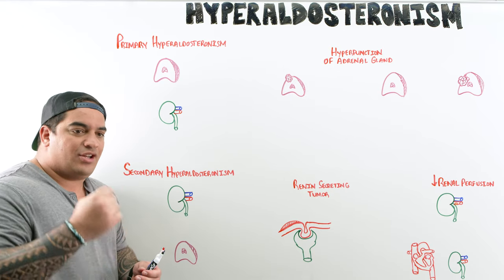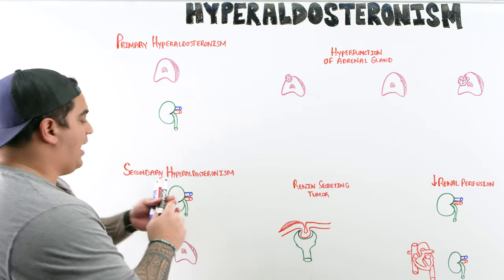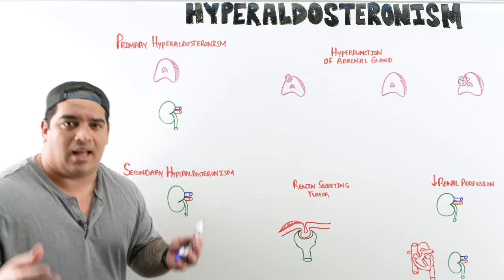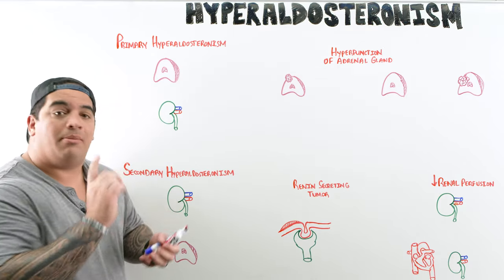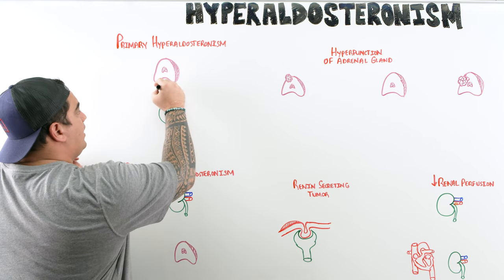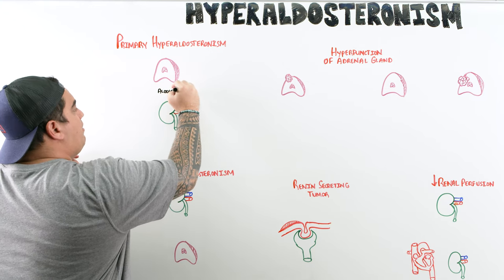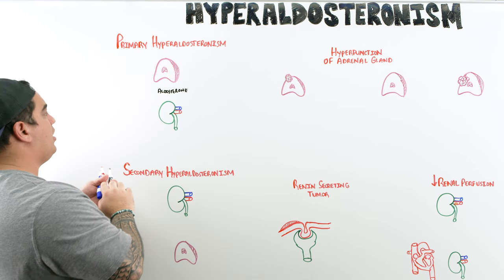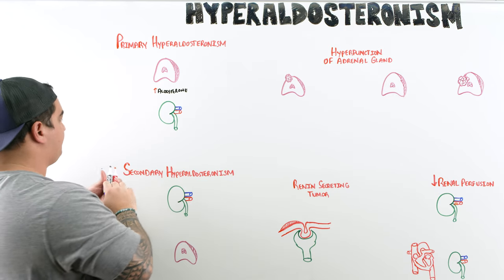In primary hyperaldosteronism, the adrenal cortex is the problem. The adrenal cortex has three layers: zona glomerulosa, zona fasciculata, and zona reticularis. The zona glomerulosa is the one responsible for releasing aldosterone. So in patients with primary hyperaldosteronism, they are producing too much aldosterone from the zona glomerulosa.